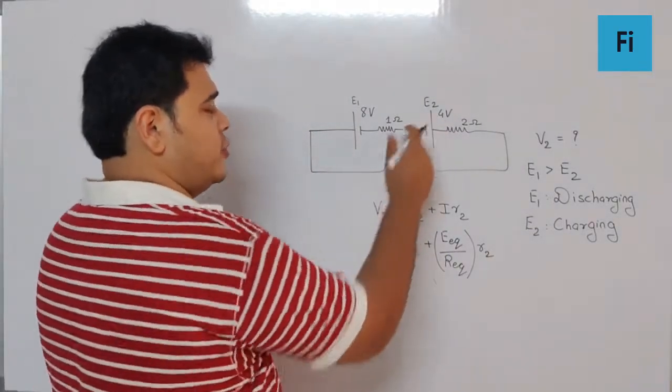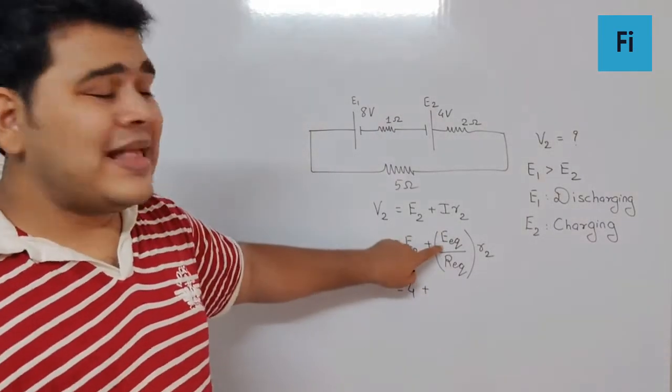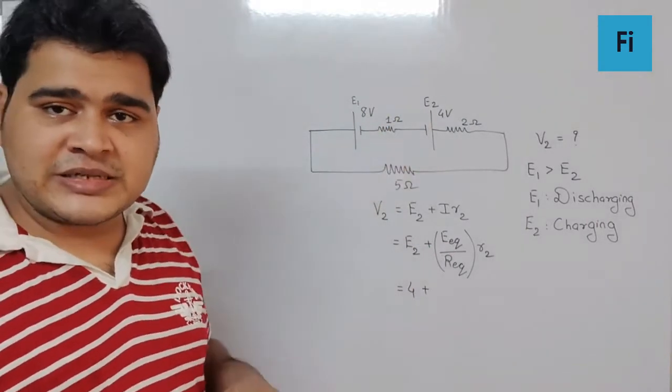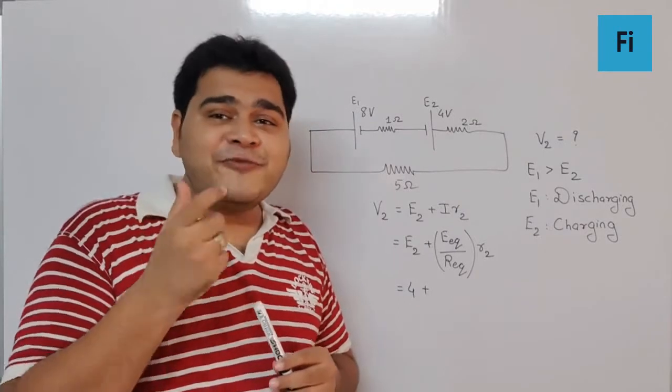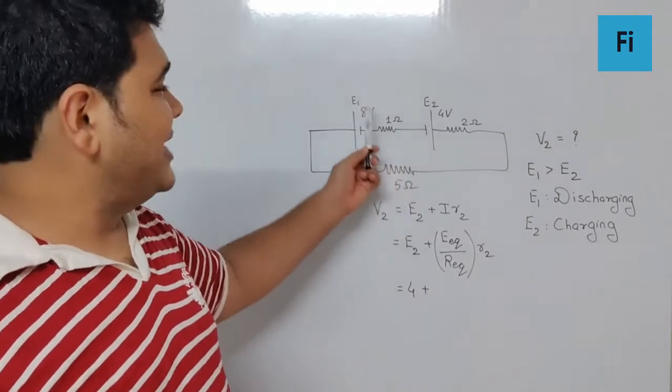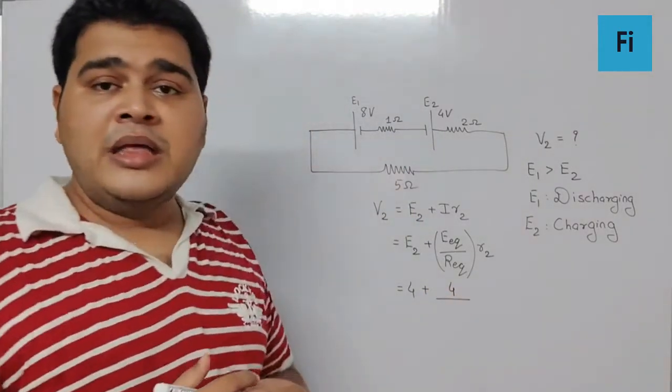If you understand, it is going to be the net EMF of the two cells. And since the net EMF is definitely going to be difference between the two because they are opposing each other, so E1 minus E2, that is 8 minus 4, will give us 4 upon the R equivalent.